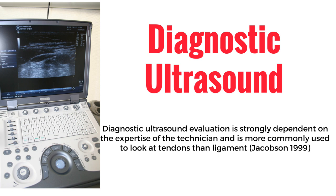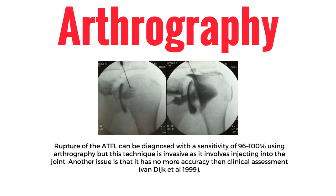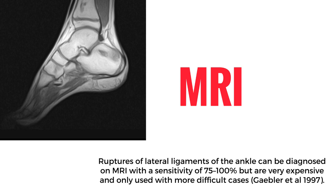Arthrography: rupture of the anterior talofibular ligament can be diagnosed with a sensitivity of 96 to 100% using arthrography, but this technique is invasive as it involves injecting into the joint. Another issue is that it has no more accuracy than clinical assessment, according to Van Dyke et al. 1999. MRI — magnetic resonance imaging: ruptures of the lateral ligaments of the ankle can be diagnosed on MRI with a sensitivity of 75 to 100%, but MRIs are very expensive and only used with more difficult cases, according to Gabler et al. 1997.